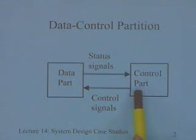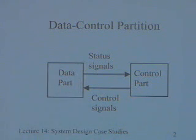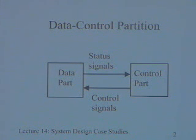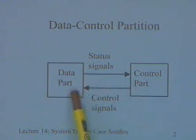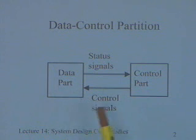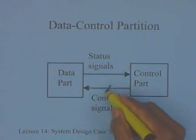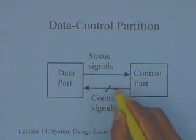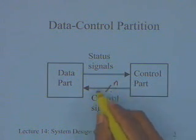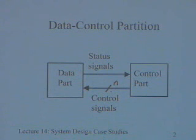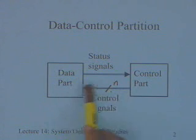The control is the one which actually initiates these operations. The data part by itself is only capable of doing operations, but the operations have to be done in a certain sequence to implement your particular functionality and algorithm. Those sequences of control signals by which you implement your algorithm are generated through control signals. There could be n control signals that control all the activity that happens within the data part.